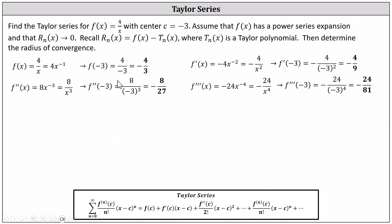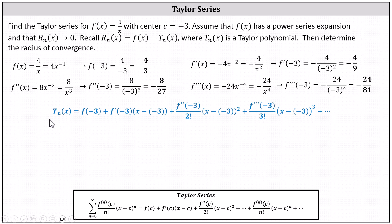To do this, we substitute negative three for c in the first four terms, which gives us T sub n of x equals f of negative three plus f prime of negative three times the quantity x minus negative three, plus f double prime of negative three divided by two factorial times the square of x minus negative three, plus f triple prime of negative three divided by three factorial times the cube of x minus negative three, and so on. Now we substitute in the function values found above and simplify x minus negative three to x plus three.